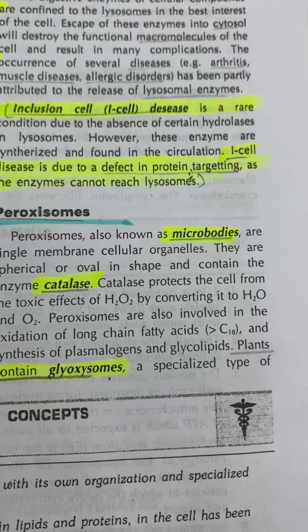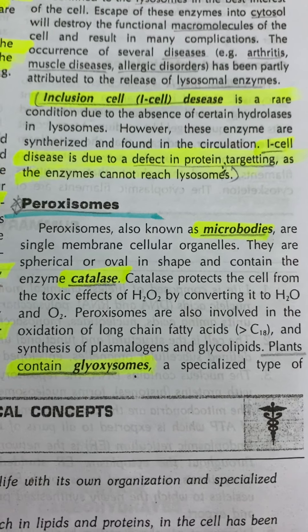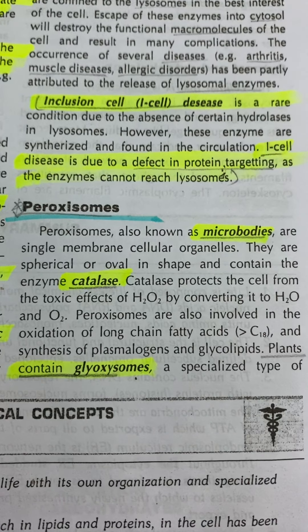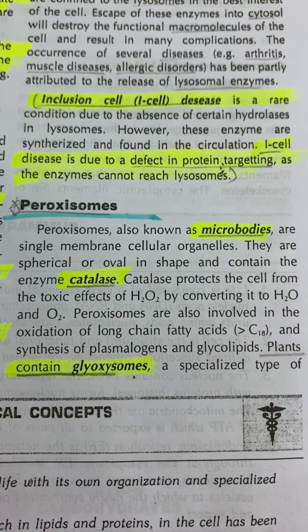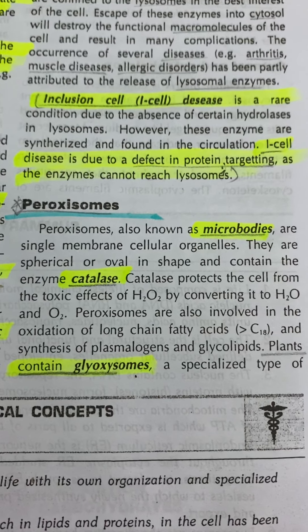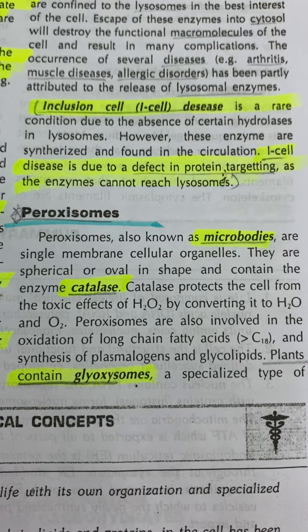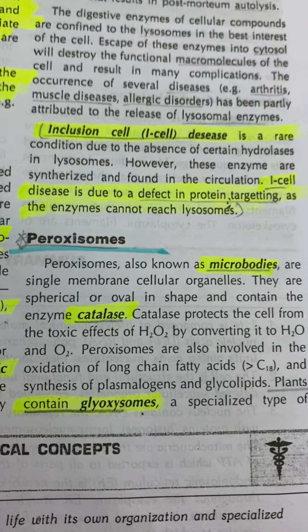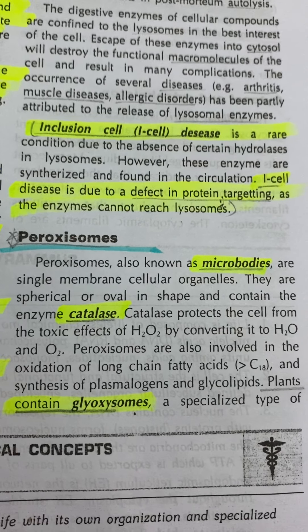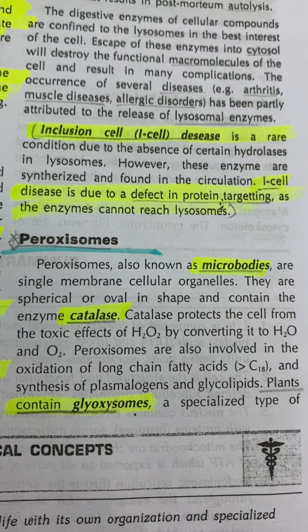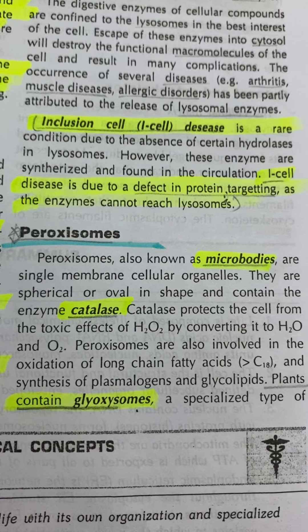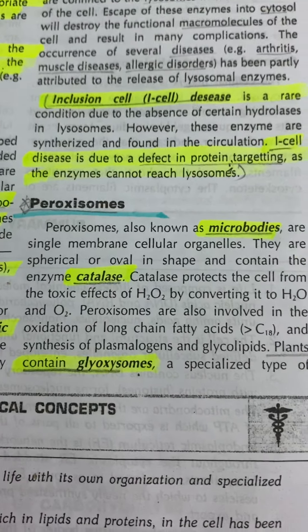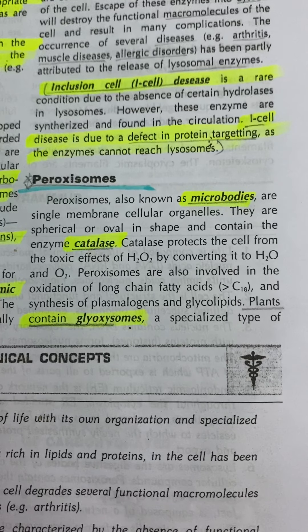I-cell disease is a rare condition due to the absence of certain hydrolases in lysosomes. However, these enzymes are synthesized and found in the circulation. I-cell disease is due to a defect in protein targeting, as the enzymes cannot reach the lysosomes.